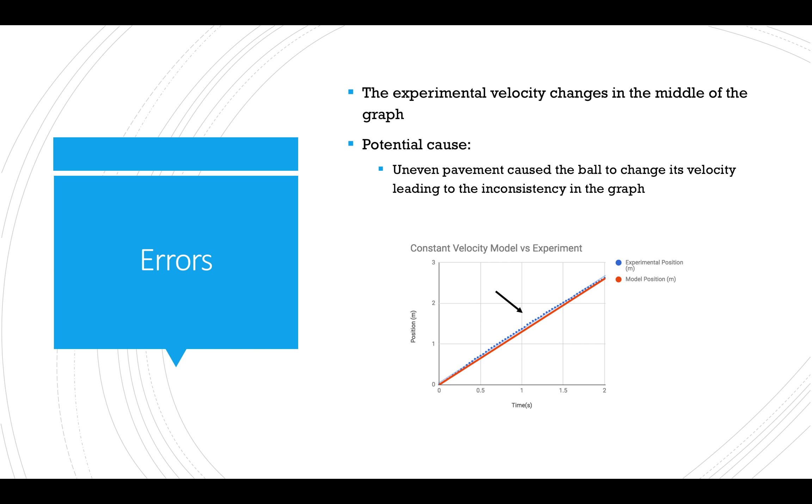To answer the first question if the axis was flipped so that the ball was traveling in the negative x direction the slope would be in the negative direction and would point to the bottom right as demonstrated by the green arrow. This would also make the velocity negative.